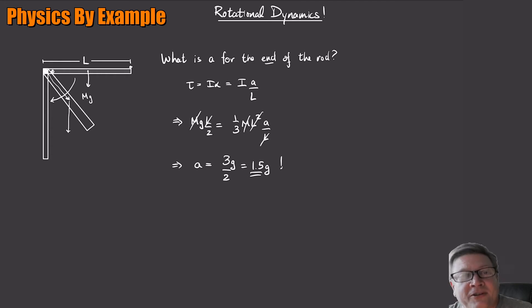So if we wanted to find how fast is the end moving when the rod is vertical, if you wanted to find that, it gets more complicated if you wanted to do it just strictly based on forces. But fortunately, there's sort of an easy shortcut. Let's use energy methods.